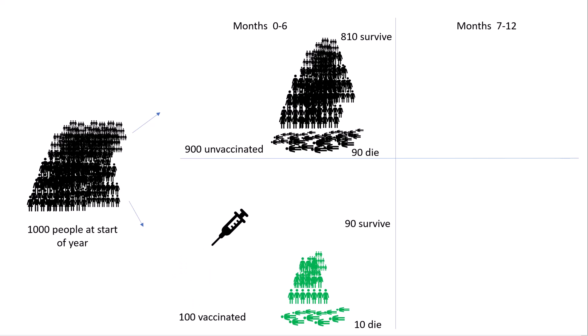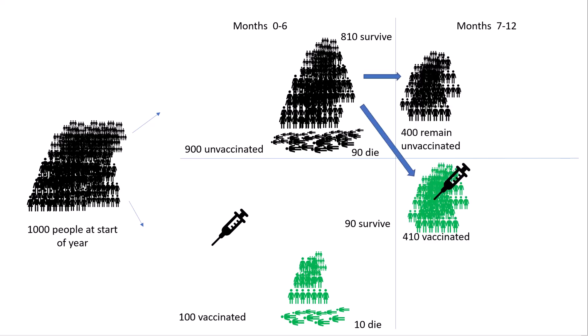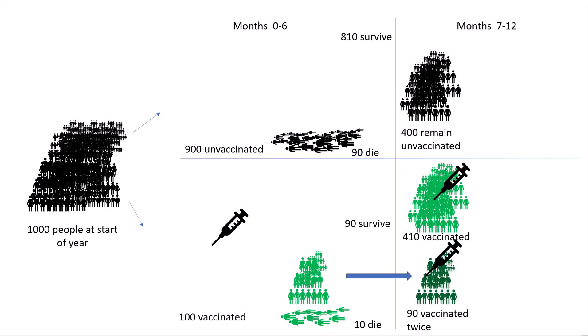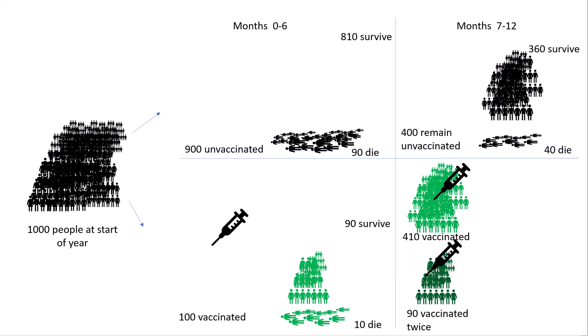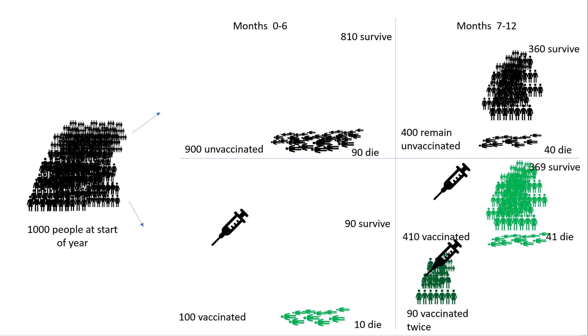In the second six months, 400 of those who survived from the unvaccinated group remain unvaccinated, but 410 get their first jab. And we've assumed that all of those who got the first jab in the first six months and who survived go on to get the second jab — there were 90 who survived, so 90 get the double jab. Of the 400 who were unvaccinated at the start of that second six months, 40 are going to die.